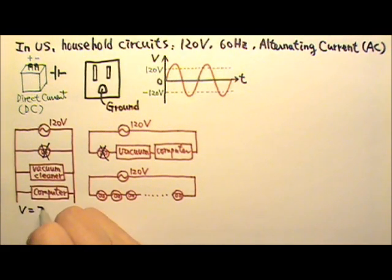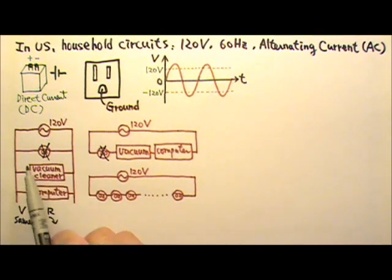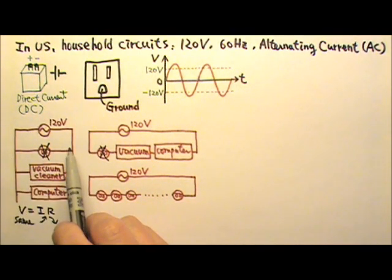V equals to IR. For the same 120V, the lower the resistance, the more the current in the total circuit. So this wire here gets a lot of current.